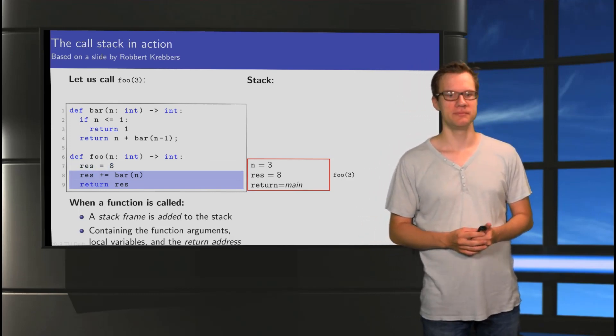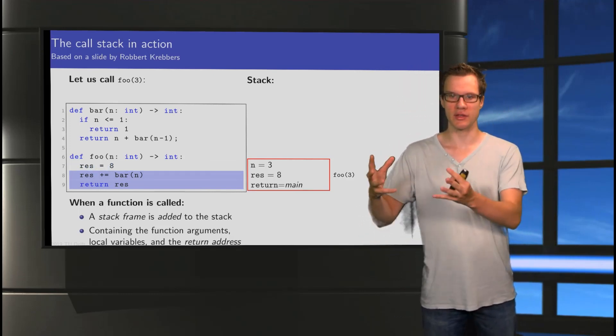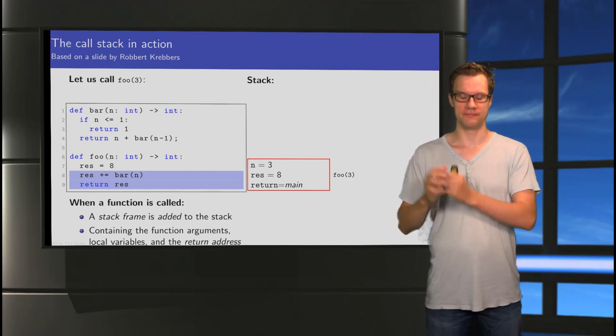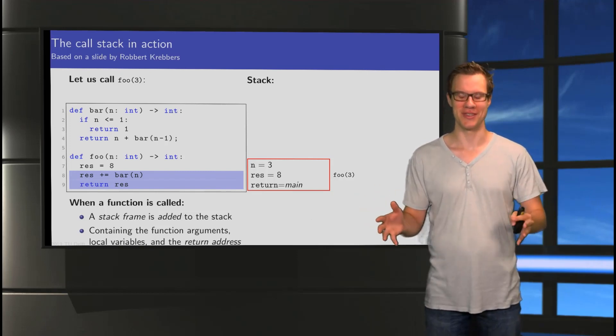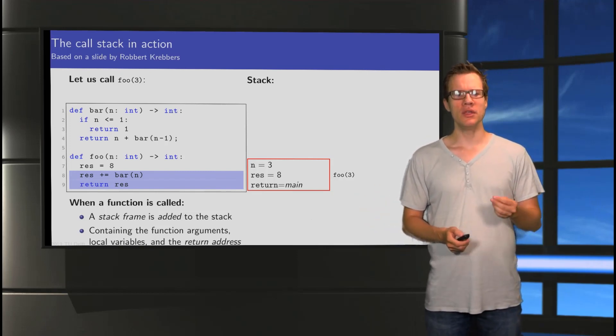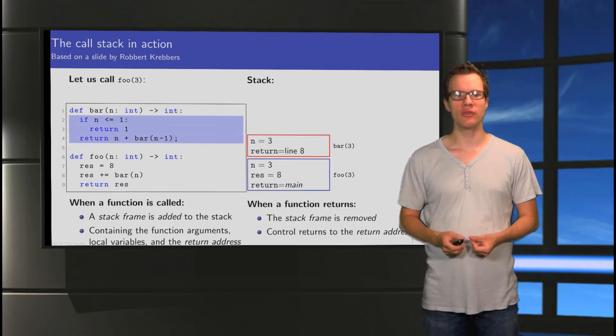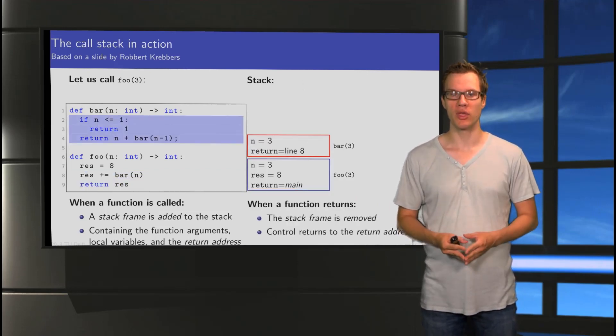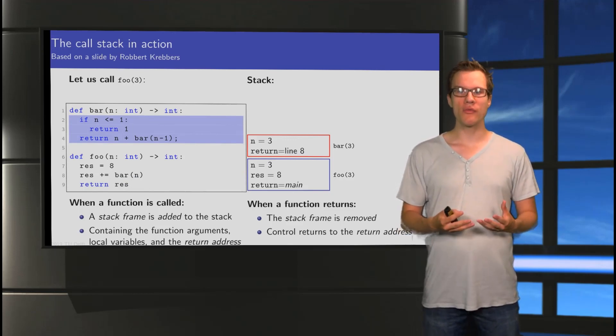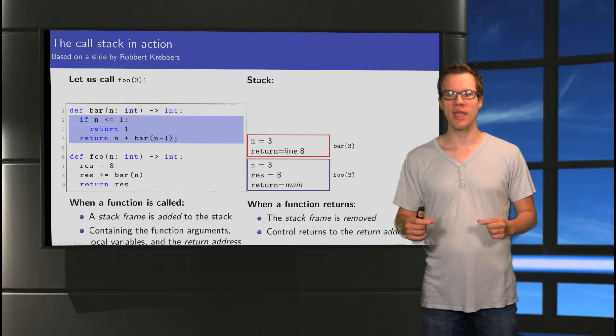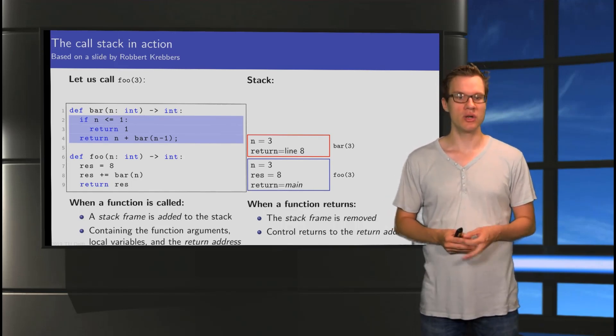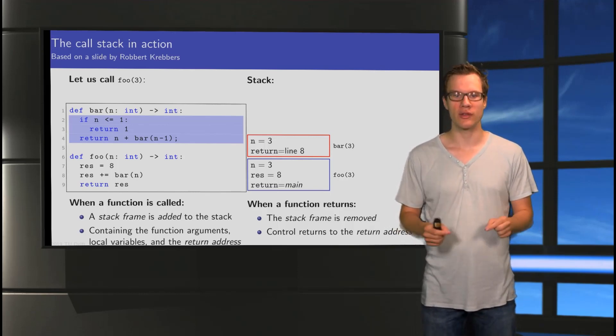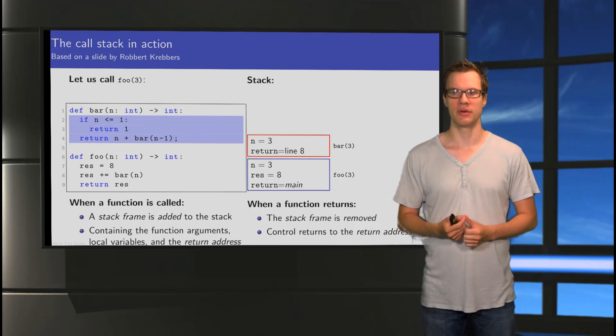Now, of course, in reality, the program knows exactly where it needs to go back to. But since we don't know what main is, I've just put main here on the slide. Okay, so it executes one line. Now res has a value. We've assigned the value 8 to our variable res. Left and right are the other way around in the studio. Still need to get used to that. Okay. So, we've done this. What's next? Well, now we get to a recursive, or we get to a call. We call the function bar.